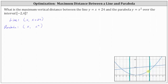Over this closed interval the line is always on top and the parabola is always on the bottom. Therefore any vertical distance, as long as the x coordinate is the same, is going to be the y coordinate of the line minus the y coordinate of the parabola. The vertical distance v will always be the quantity x plus 24 minus x squared, as long as the line is on top over the closed interval from negative 2 to positive 4.